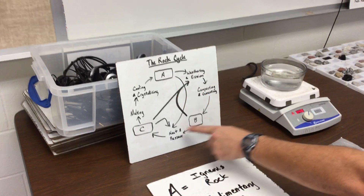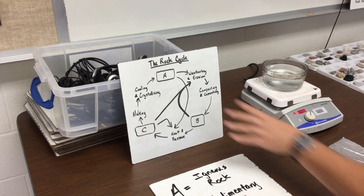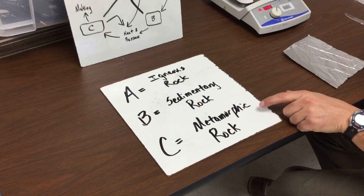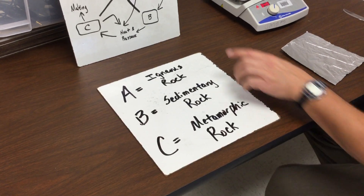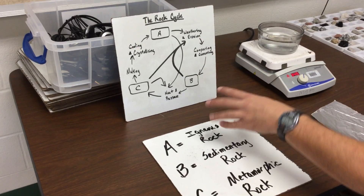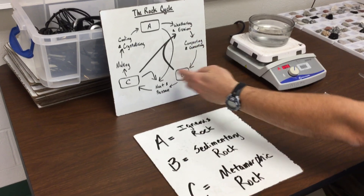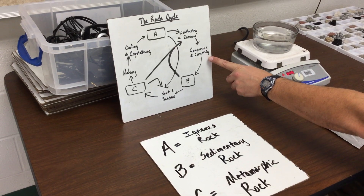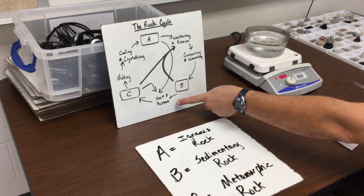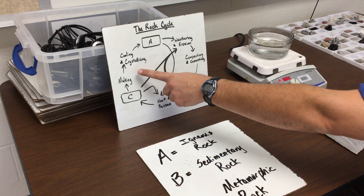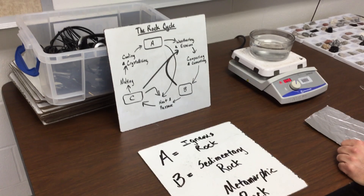Notice that each rock type A, B, and C — to save some space — those are the rock types. So A is igneous rock, B is sedimentary, and C is metamorphic rock. The main thing to take from the rock cycle is that any rock can be turned into another type through different geological processes. We're going to talk about weathering and erosion, compacting and cementing, heat and pressure, and melting, which ultimately results in cooling and crystallizing back into rock type A.